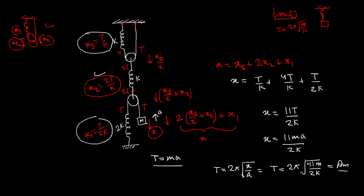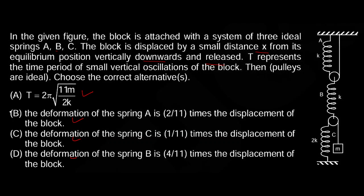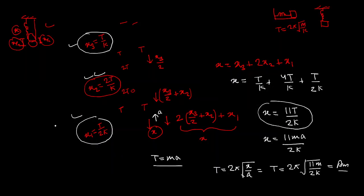Now you have x3, x2, x1, and x. You can very easily find the ratio of x1, x2, x3 in terms of x. If you do that, you will find that all the options are correct. The time period we have already found. So all options will be correct, and this is how we attempt this question.